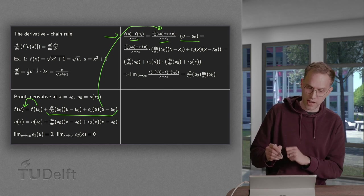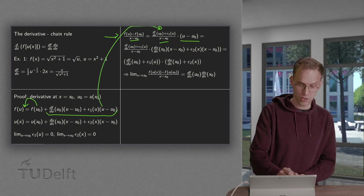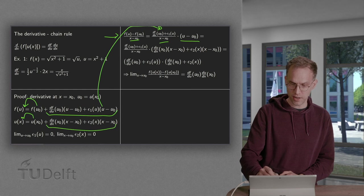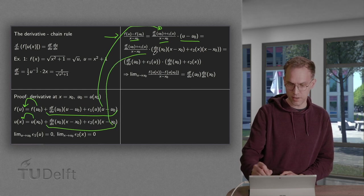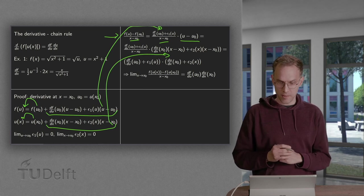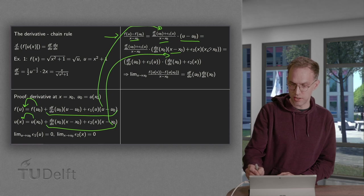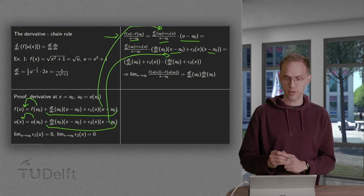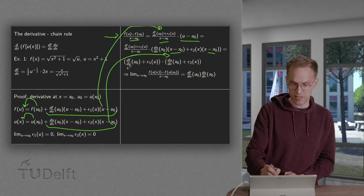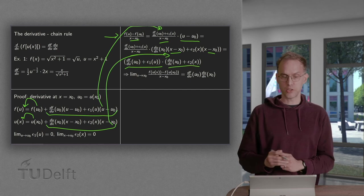Then we also have an expression for u(x) minus u0 which is u at x0. I bring this to the other side. Then you are left with these two terms over here which we copy over here. So there we go. And you see they have an x minus x0 in common. There's an x minus x0 over there. So these terms cancel out. So we are left with the df/du plus epsilon 1 times the du/dx plus epsilon 2.